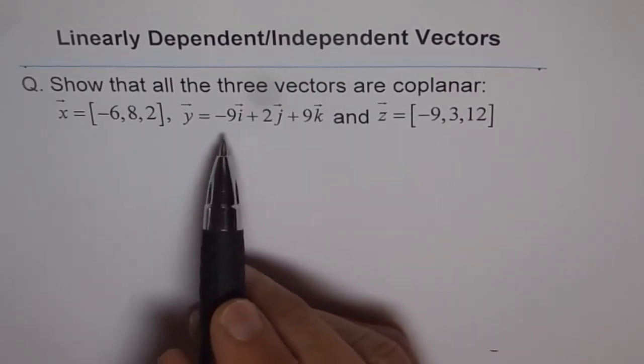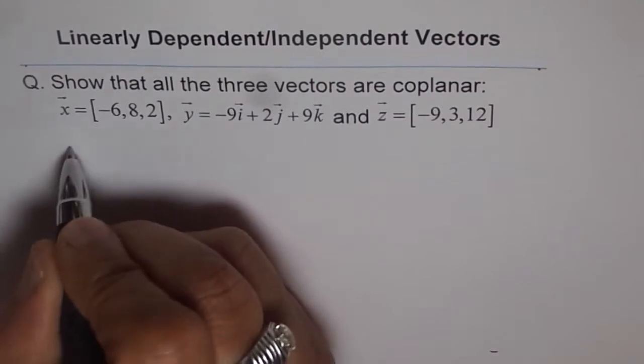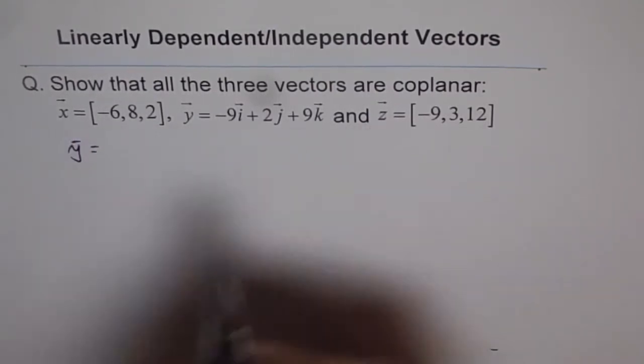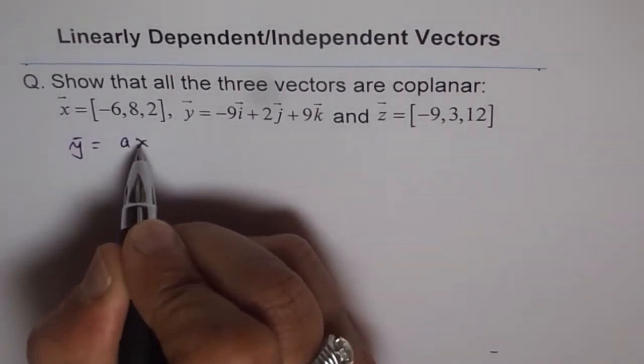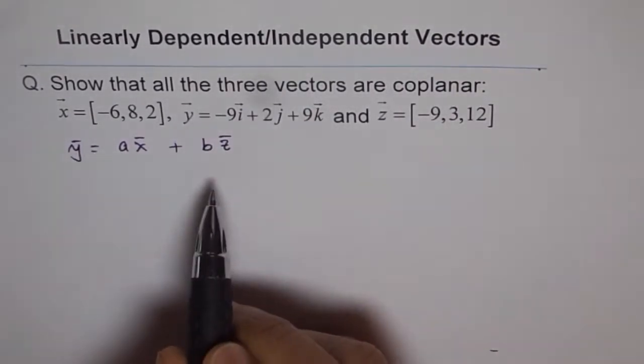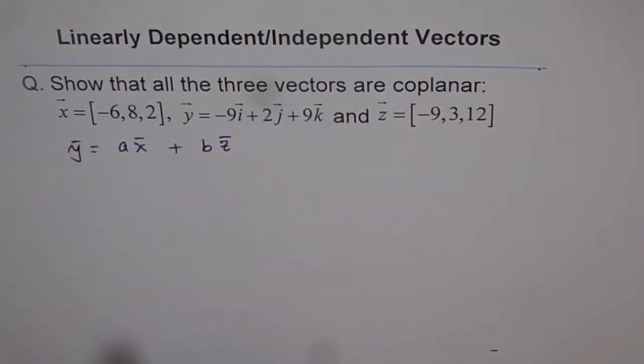So what I am trying to say is that if you can write y as a linear combination of, let us say, x and z, say a times x plus b times z, in that case they are in the same plane and they become coplanar. So let's try to do this.